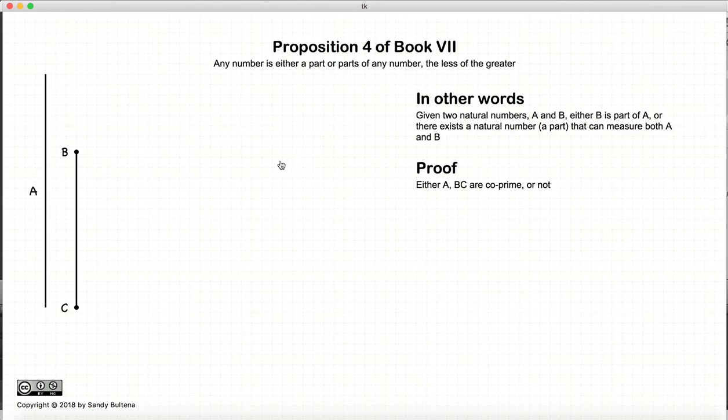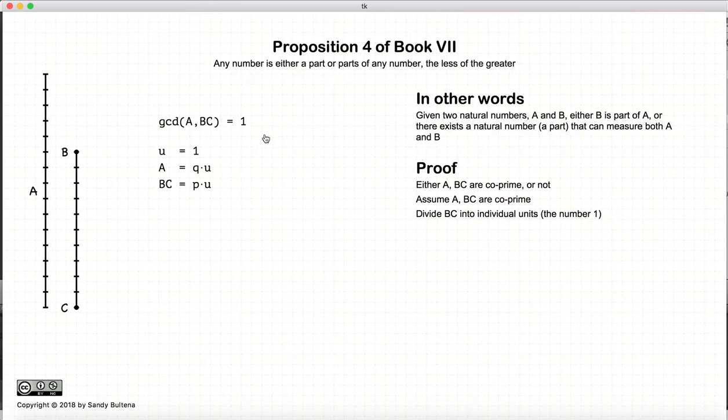Alright, so this has three distinct proofs depending on various situations. So, let's assume that A and BC are either co-prime or they're not co-prime. So, we're going to start with assuming that they are co-prime. In other words, the greatest common denominator between A and B is equal to 1.